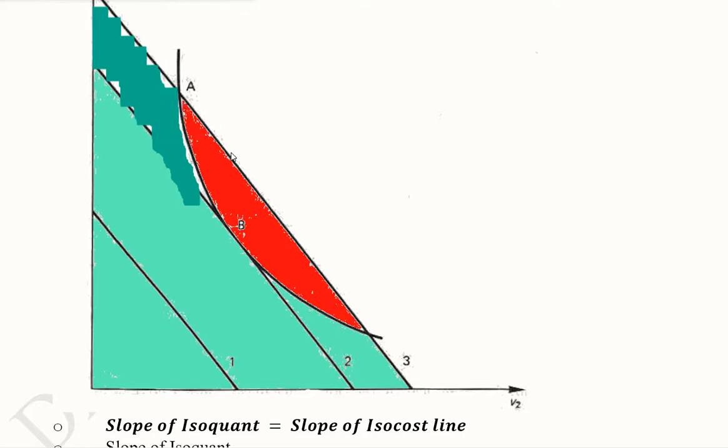If we use the third isocost curve, it will be here and here, which is not desirable because we are using this much of the additional cost, from 2 to 3. We can produce the same output by using isocost curve 2, so it's better to be settled here.